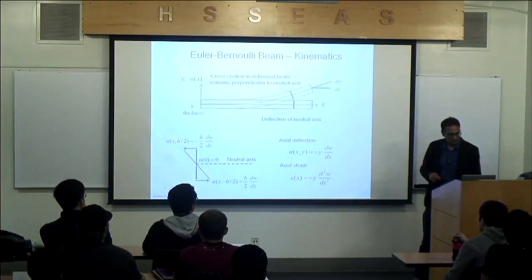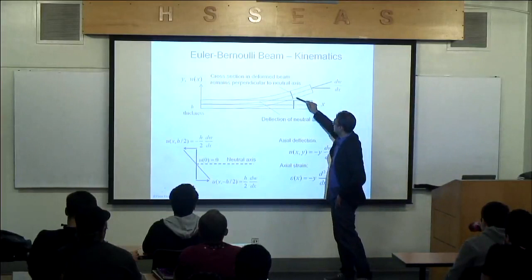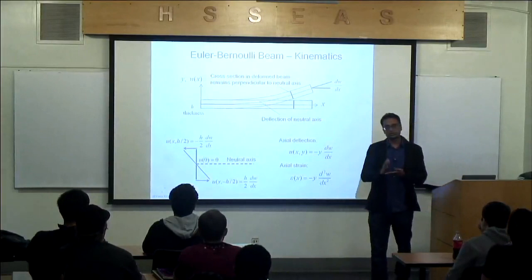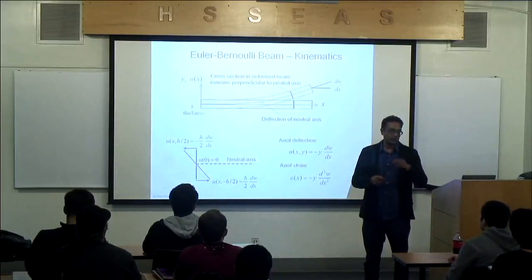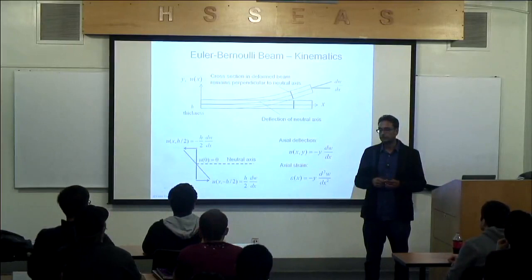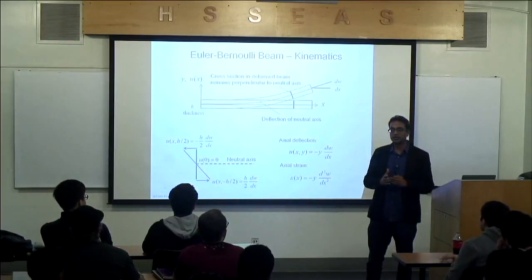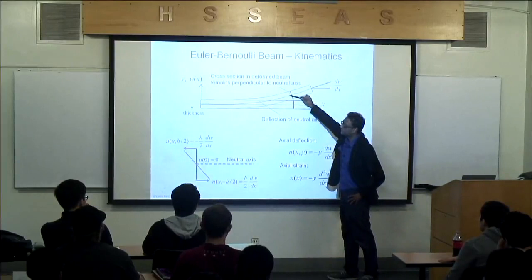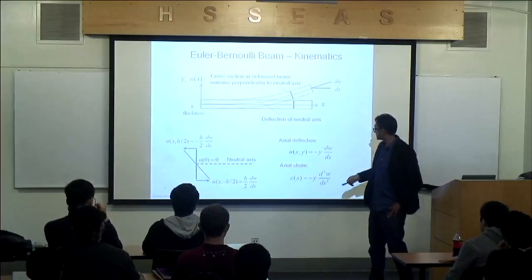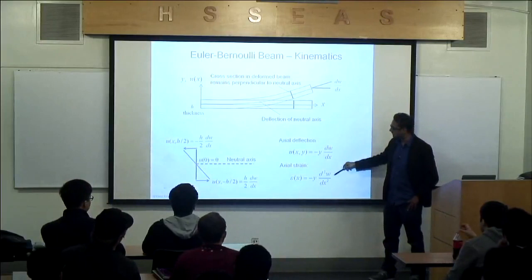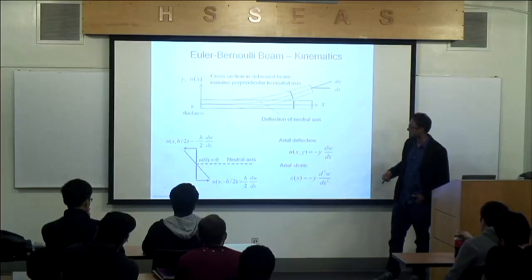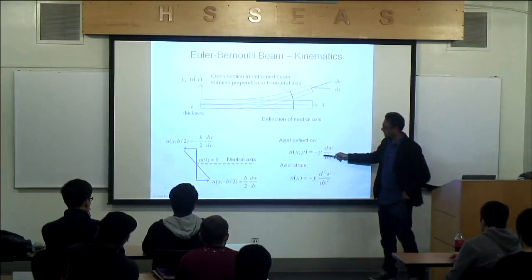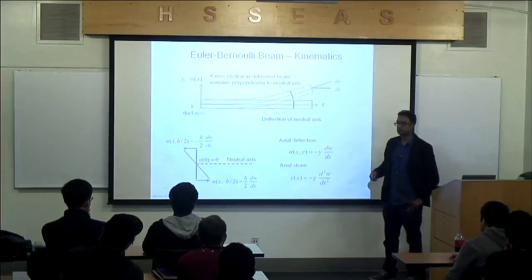We talked about the cross-section remaining normal to the neutral axis — that's a fundamental assumption. What are the implications on the strains? If there's no change in angle, it means that the transverse shear is zero. The little cube does not get distorted. This assumption actually works out: if you calculate shear deformation due to this deflection assumption, you will find basically zero transverse shear.